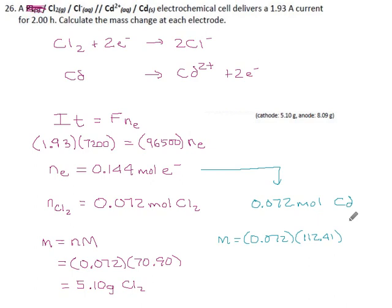0.072 times 112.41, I get 8.09 grams of cadmium metal. Now apparently from the key here, they wanted us to say which one's happening at each electrode, which isn't totally clear from the question, but whatever.